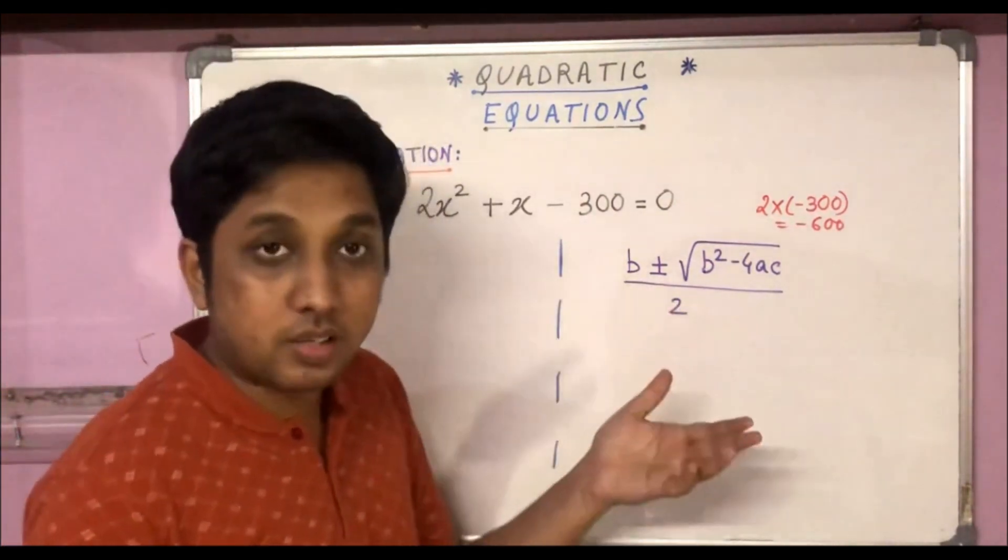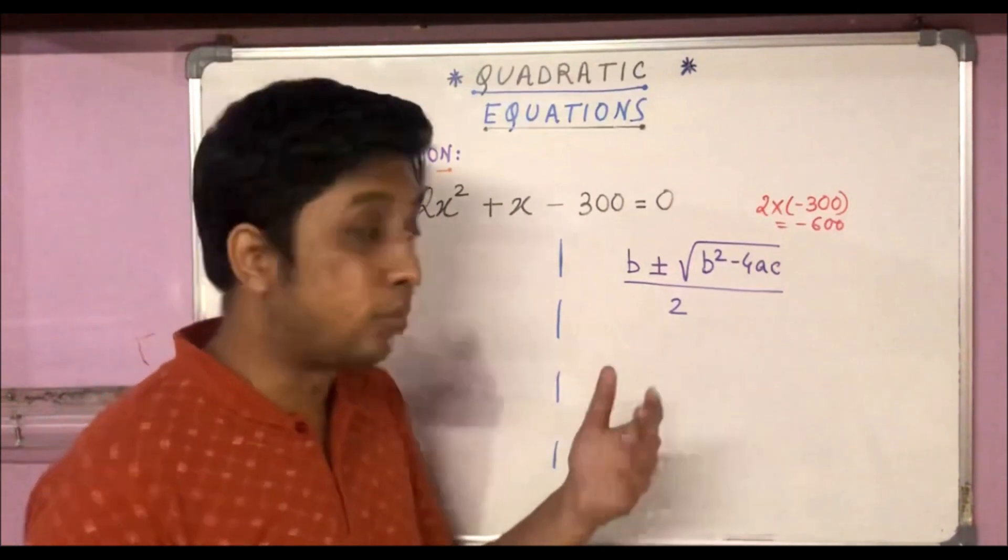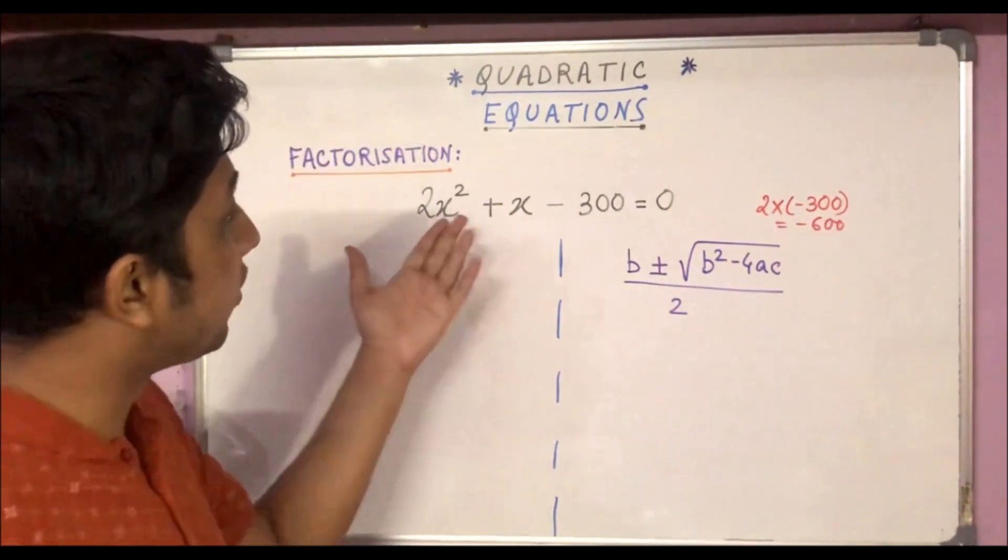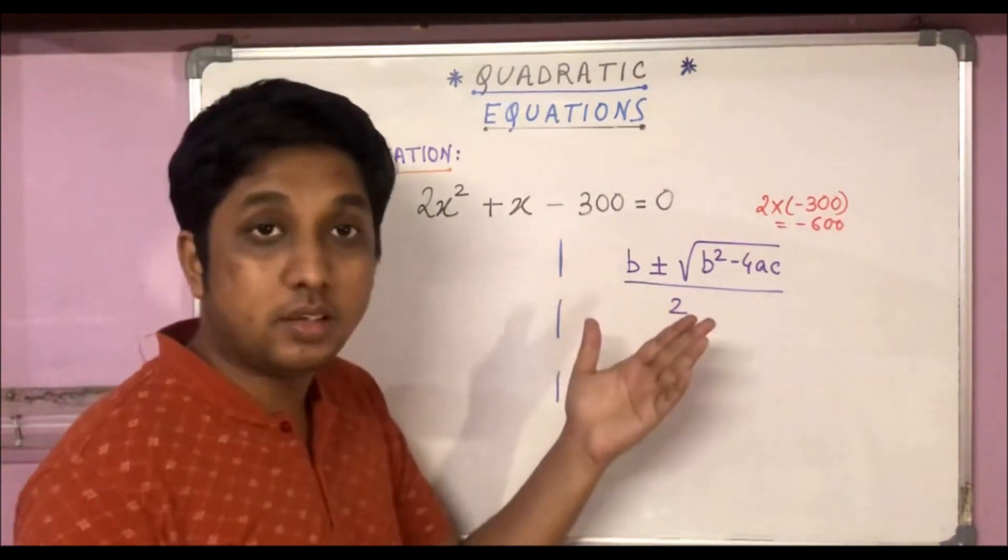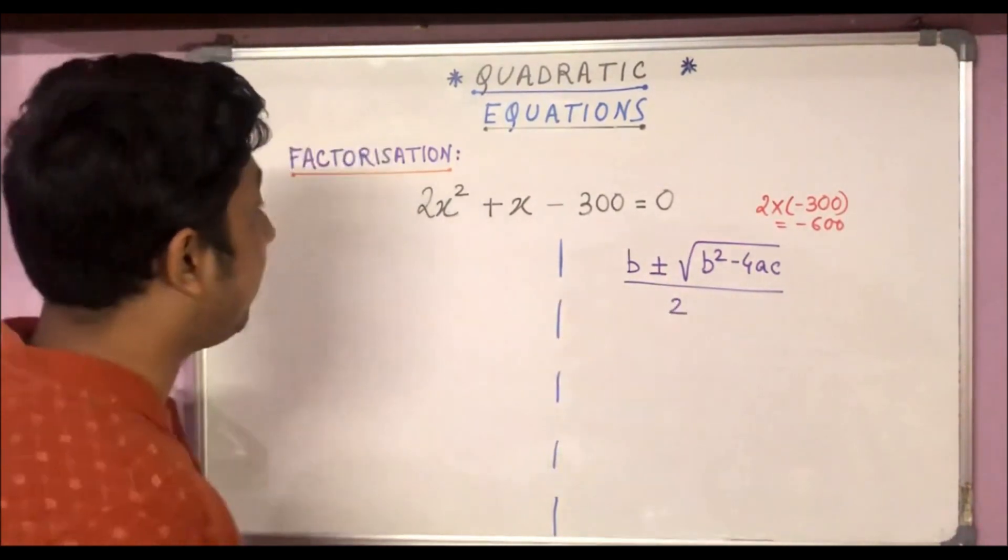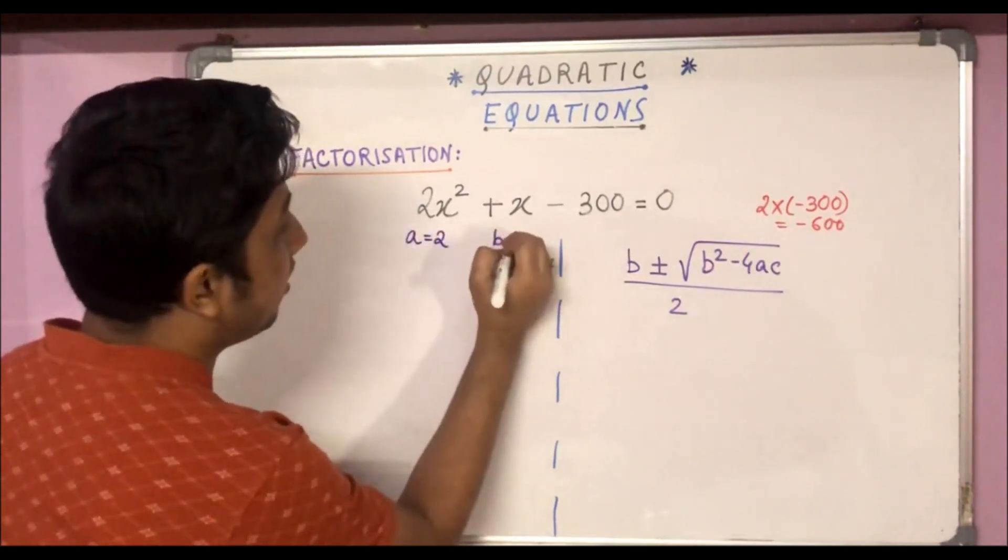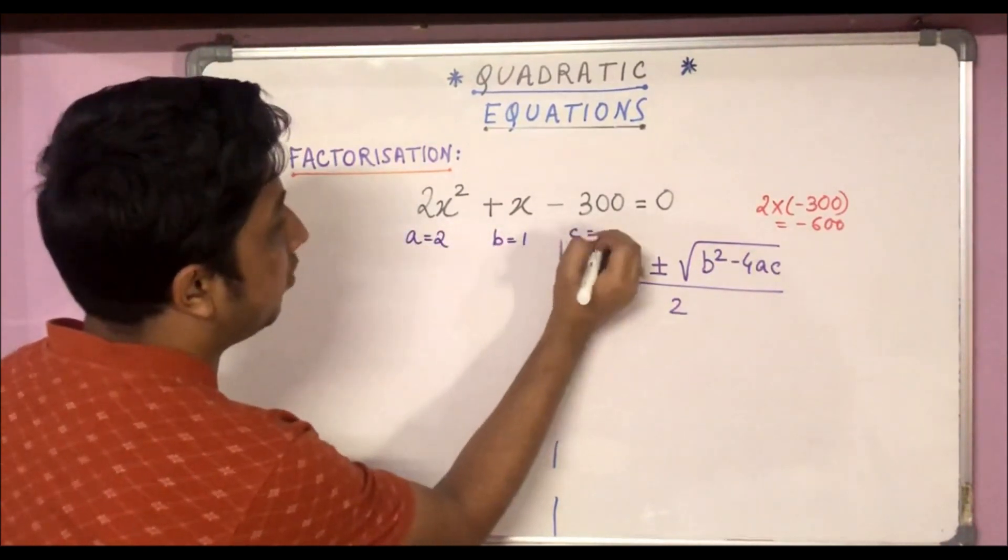Let's try this and see whether it works or not. If we compare this equation with the standard form to get the values of a, b and c, obviously we have a = 2, b = 1, and c = -300.